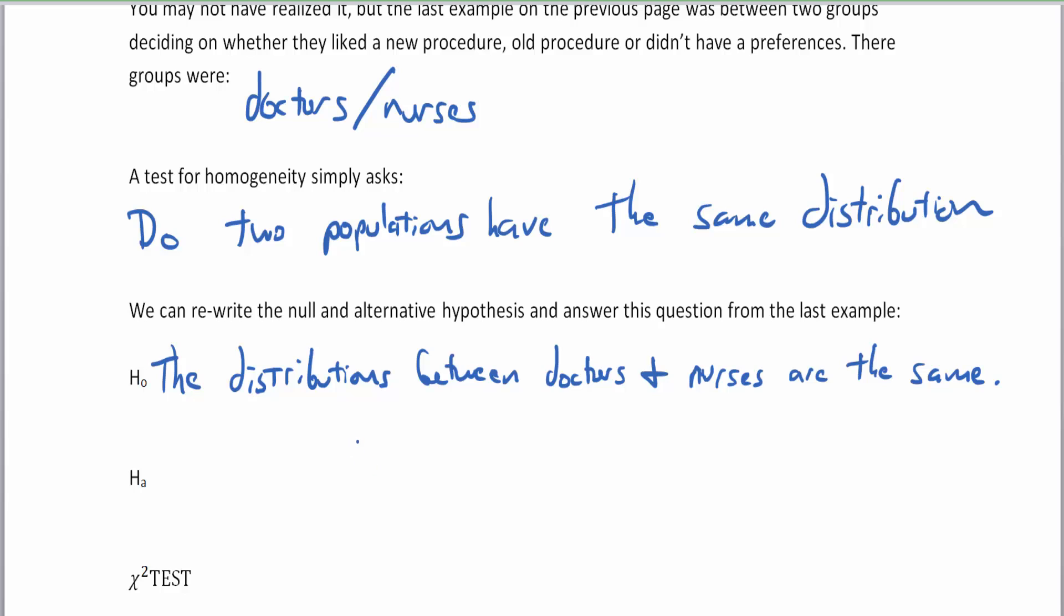Now we can rewrite the null and alternative hypothesis from the previous problem. The null hypothesis says the distributions of the doctors and nurses are the same. The alternative would be the distributions of the doctors and nurses are not the same.